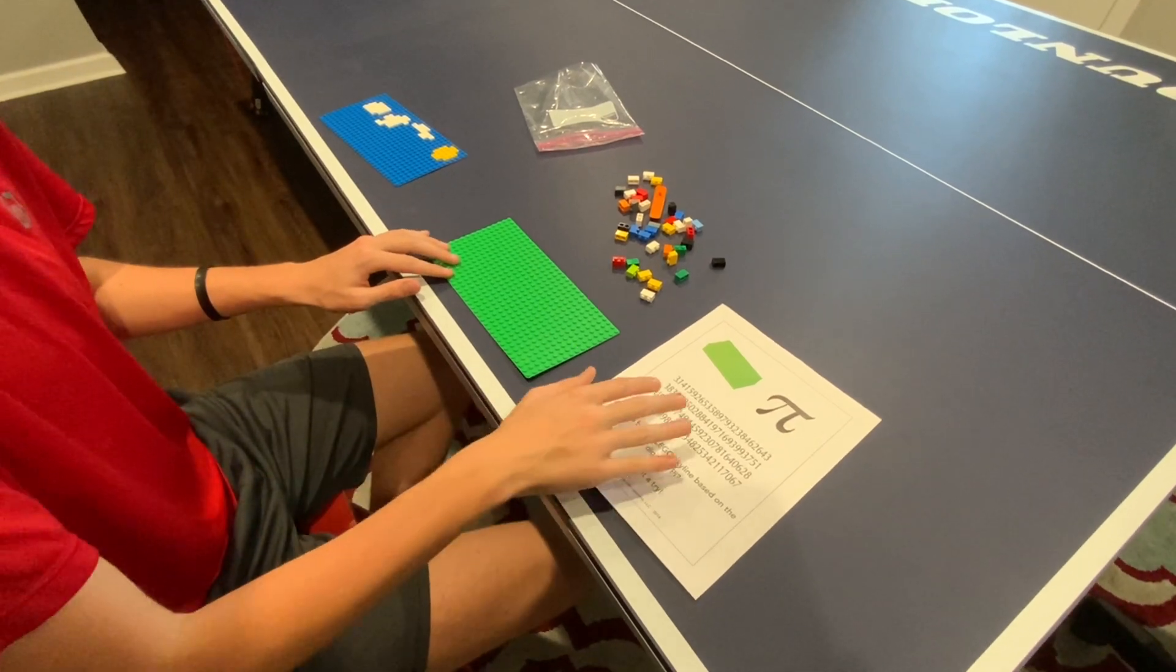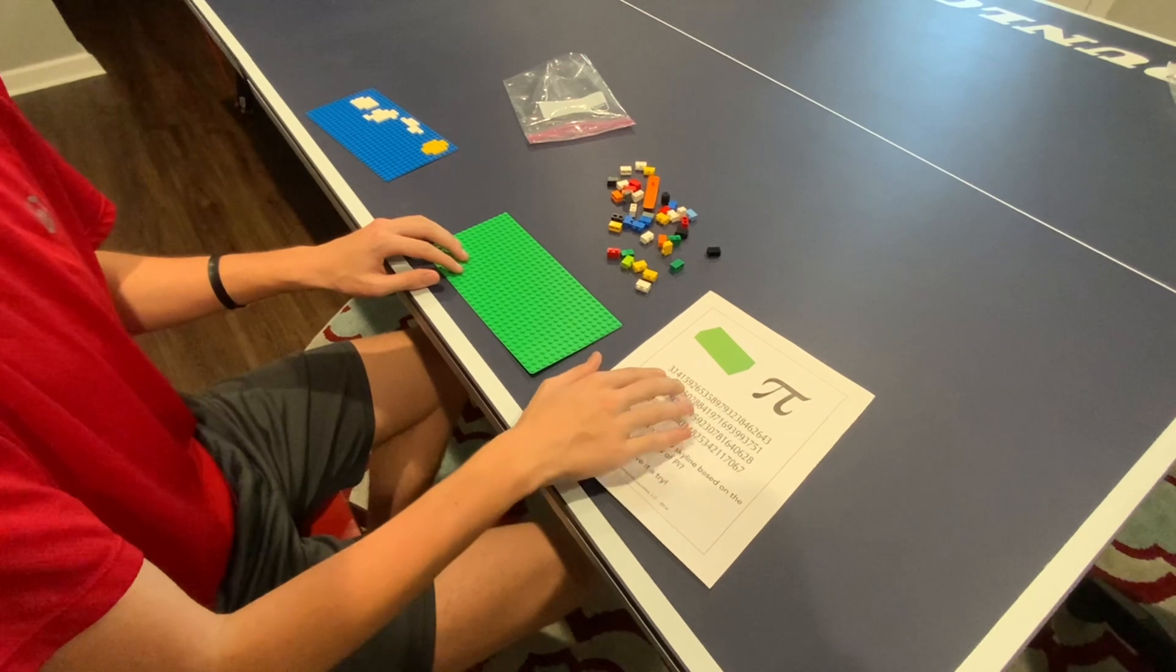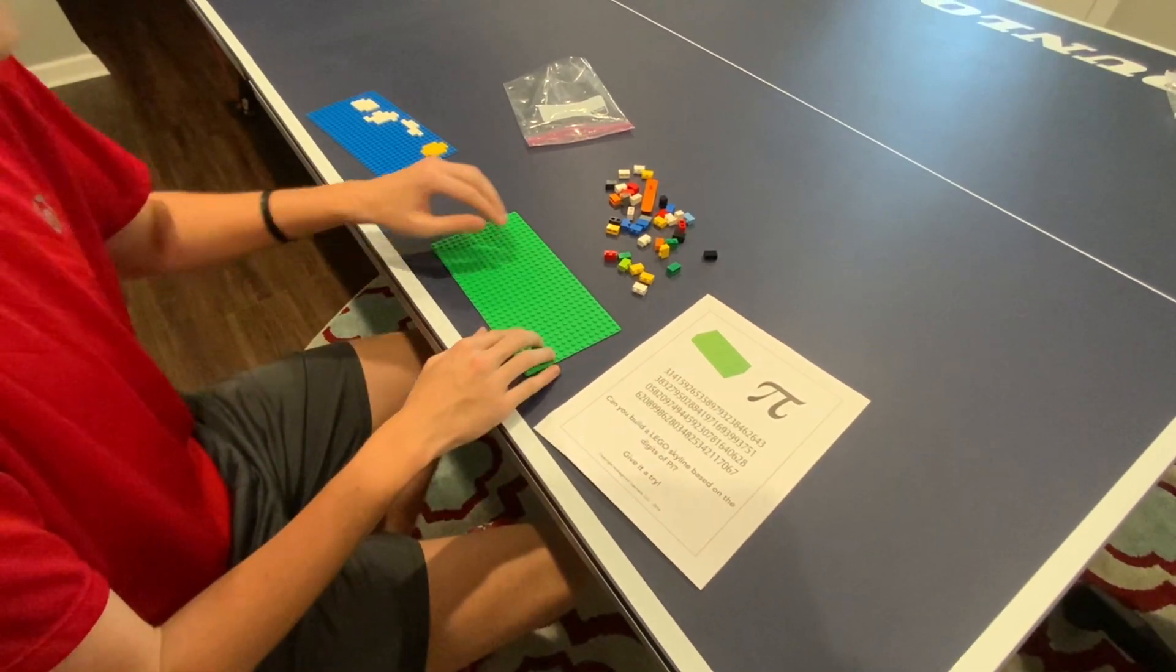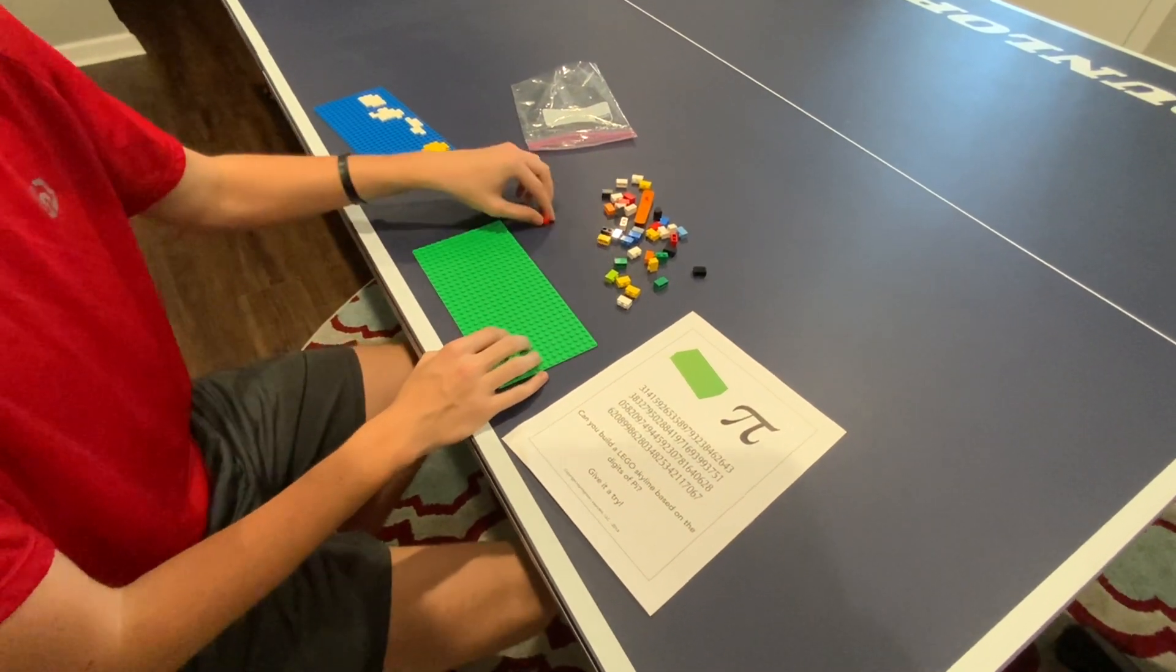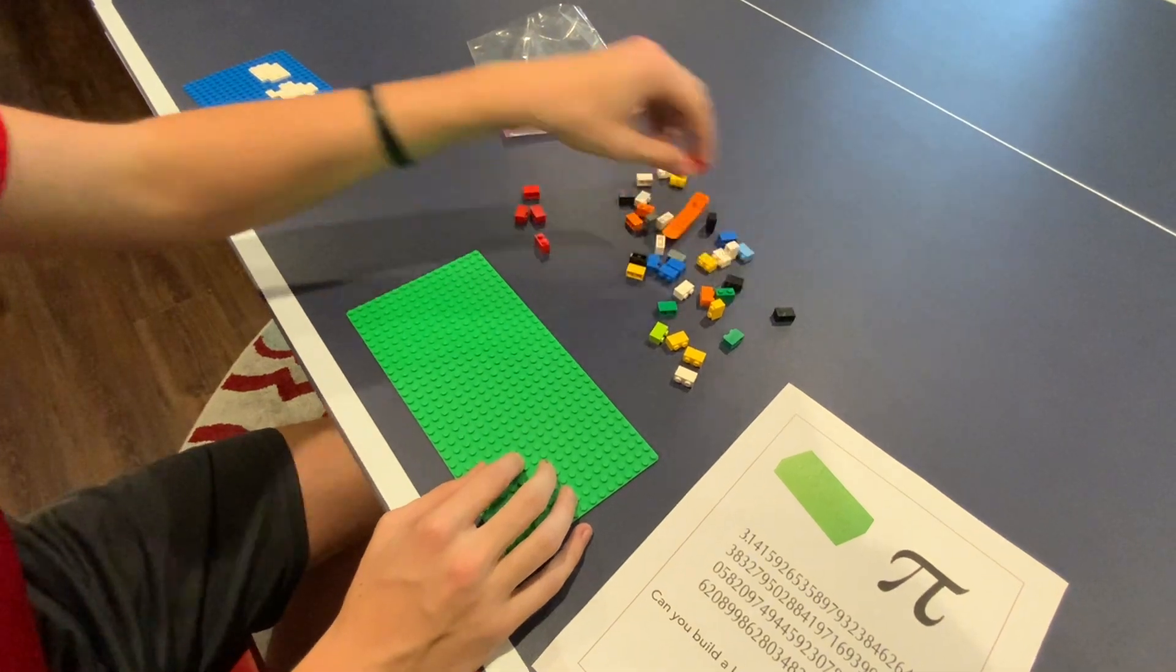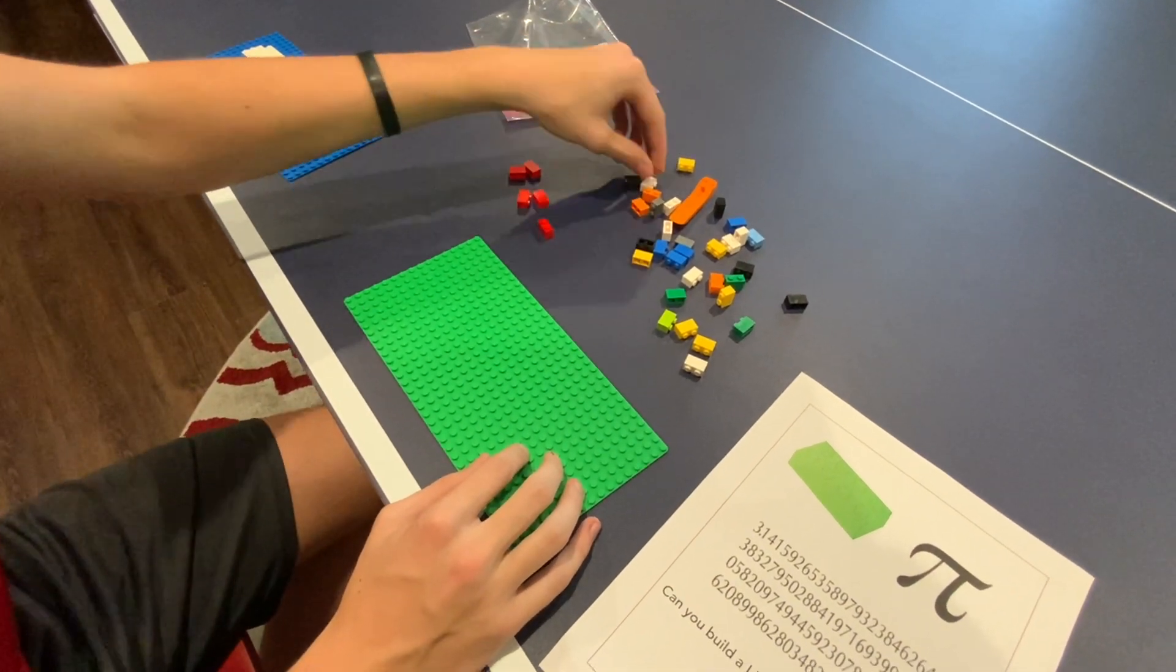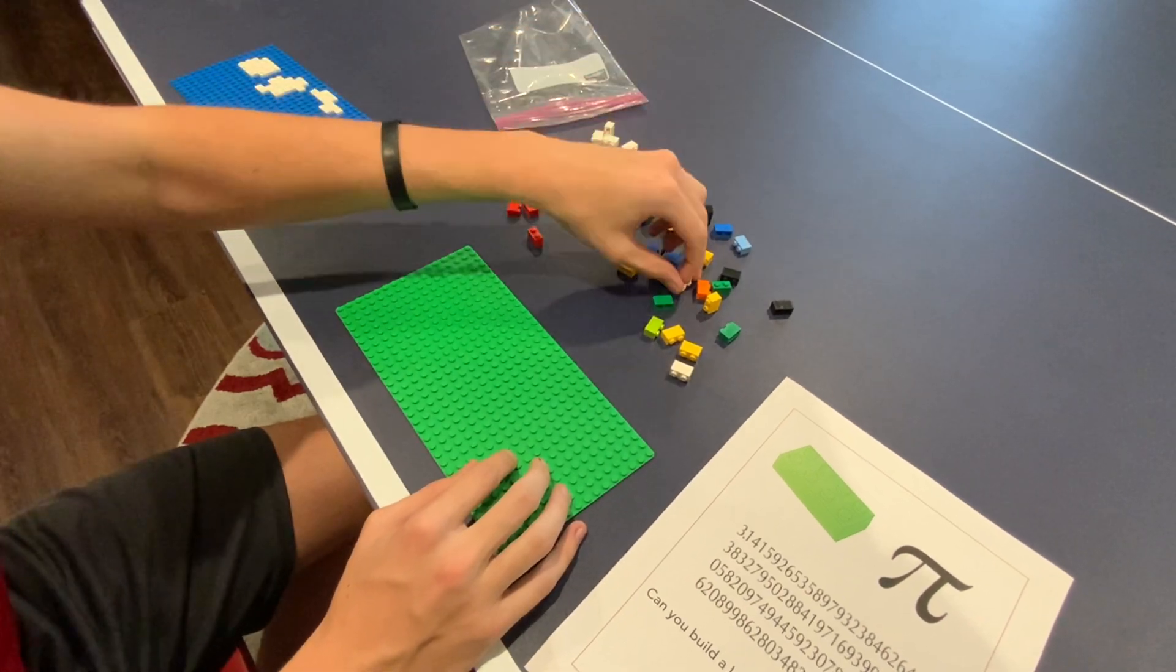So now we're going to do the towers. On this printout, we have all the numbers of pi, but we're only going to be doing the first 10. So what I've done is I've gotten these bricks sorted by color. So I have five reds, a bunch of whites, three, four, five, six, seven, eight, nine whites.